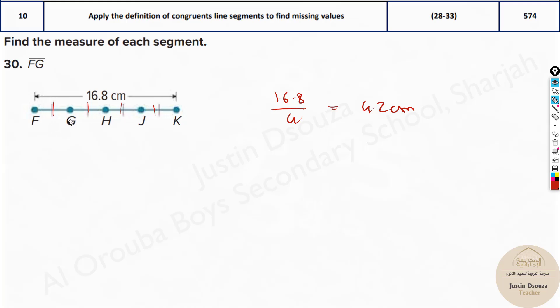Otherwise you know this is all equal. So consider this to be X, X, X and X. Add them all up. X plus X plus X plus X that is 4 times X will be equal to 16.8. Therefore 4X is equal to 16.8 or X is equal to 4.2 centimeters.